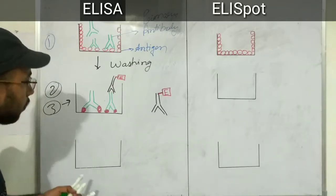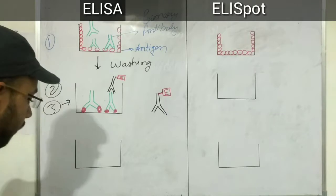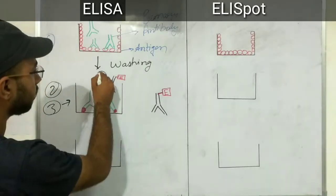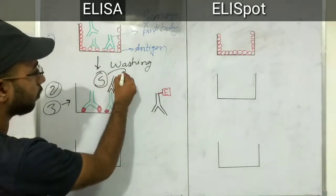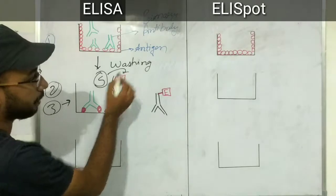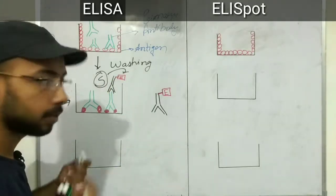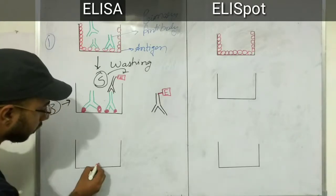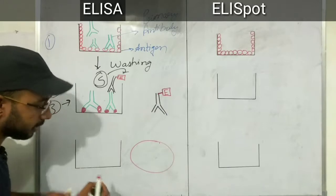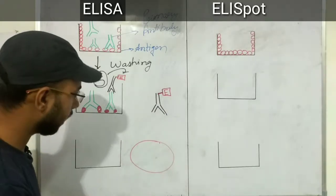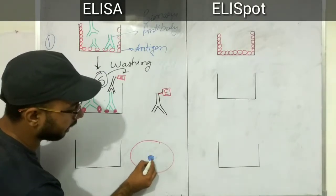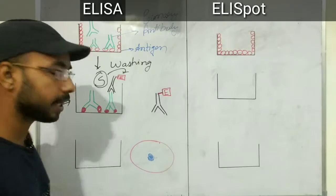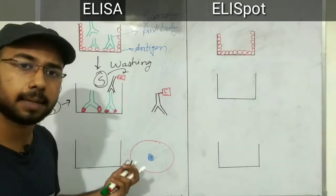That's why it is known as enzyme linked immunosorbent assay — because this secondary antibody, which is enzyme linked, attaches to the primary antibody. In the fourth step, we add a substrate. The enzyme and the substrate react with each other and show a glow — a color that is visualized in the plate. The well appears as a glowing colored spot, and by observing the color, we can identify the antigen or antibody specific to that.